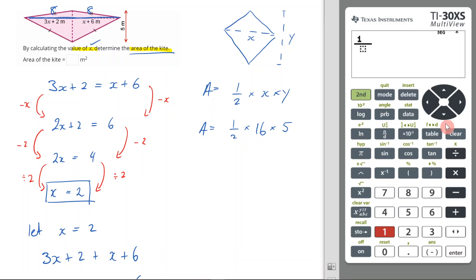1 over 2 times 16 times 5, and my answer will be 40. So my area is equal to 40 meters squared.